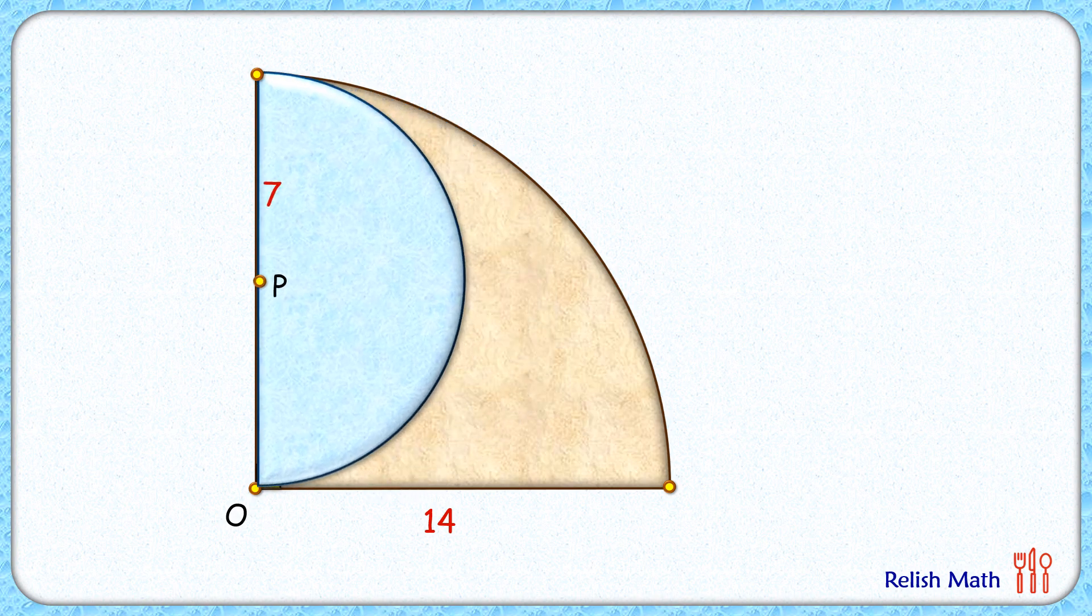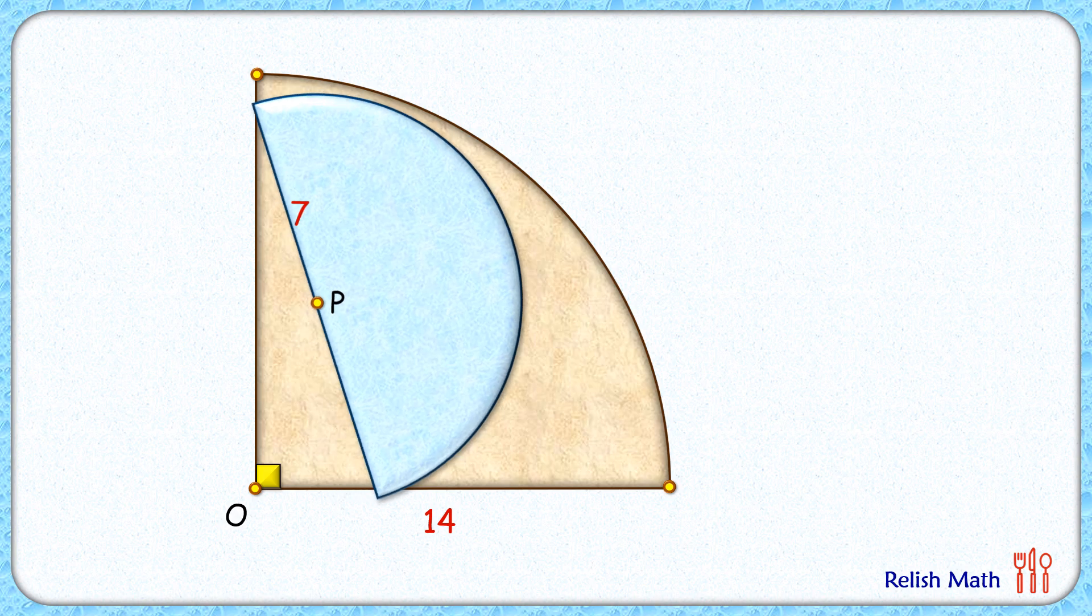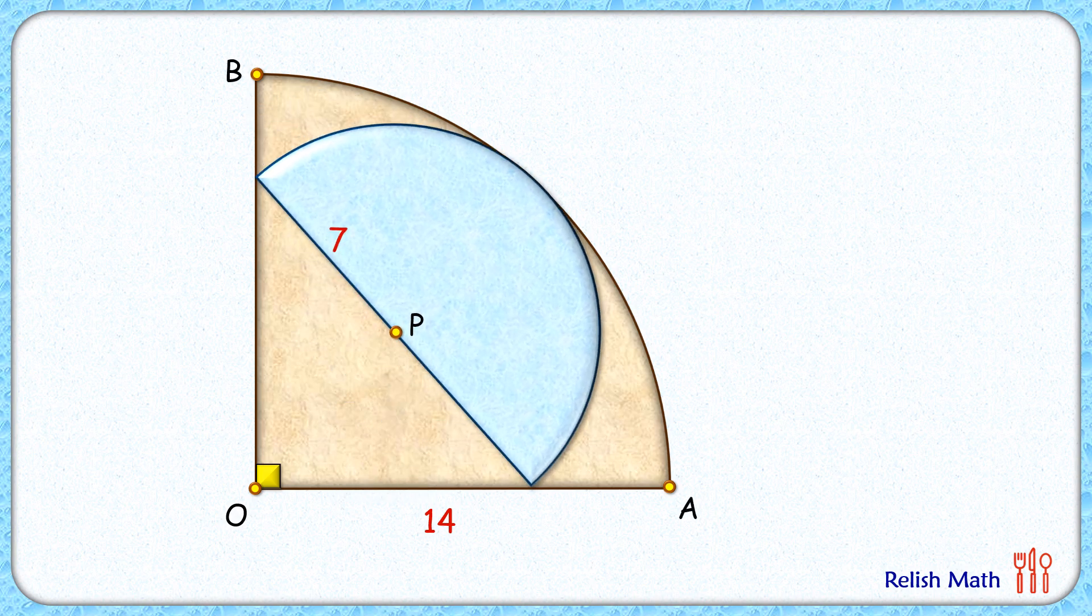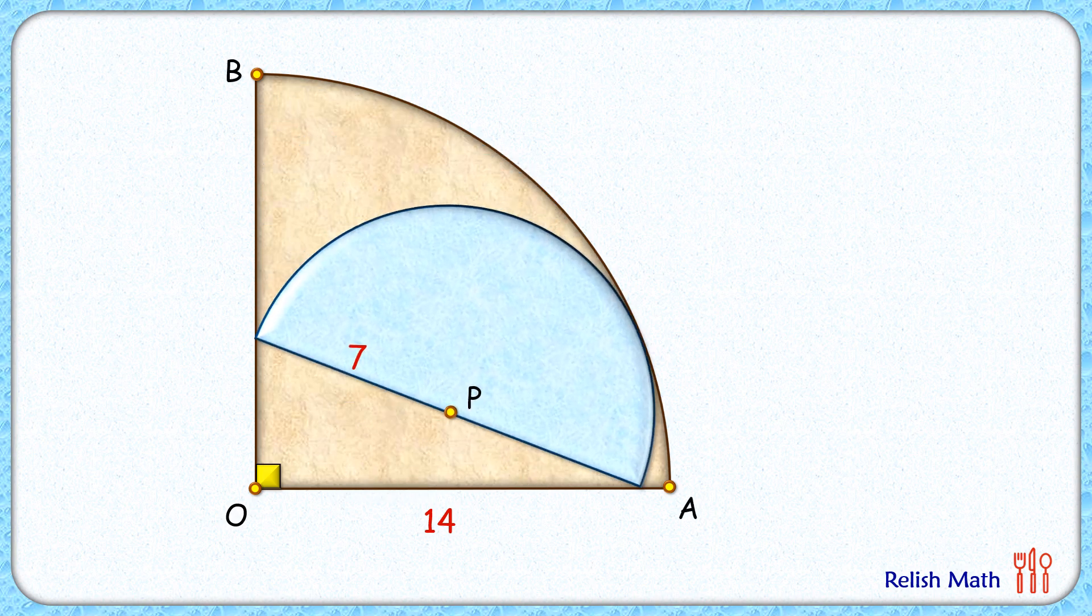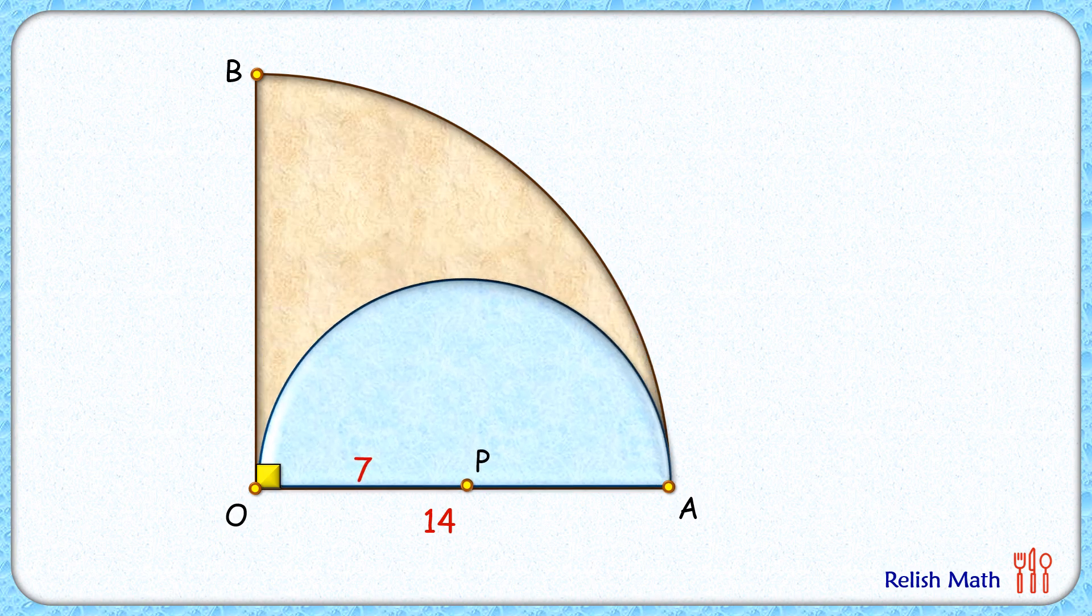Now whether you align it with the vertical radius or rotate it clockwise to different degrees or align it with the horizontal radius, the radius of the blue semi-circle will remain fixed, that is 7 cm.